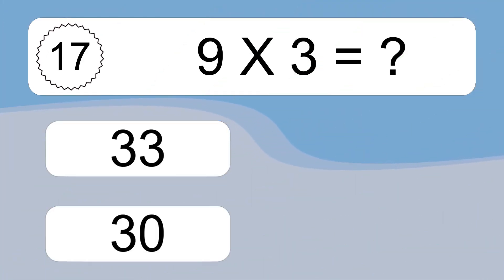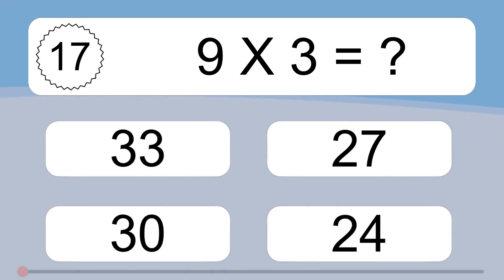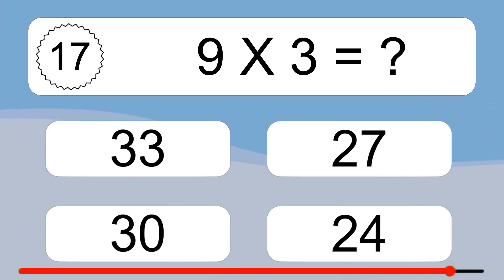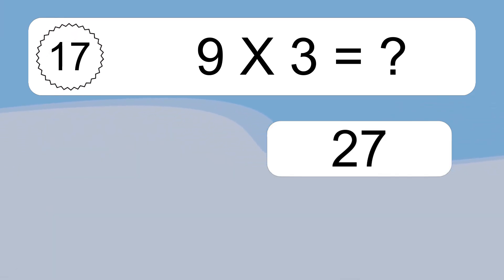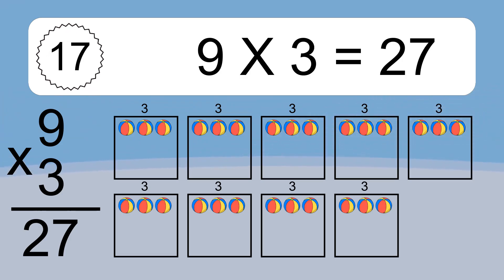Nine times three equals what? Nine times three equals 27. We have nine boxes, and each box has three colorful balls inside. If you count all the balls in all the boxes together, you will have nine times three balls. This equals 27 balls.